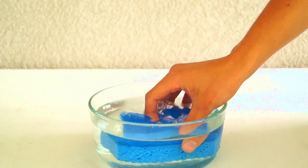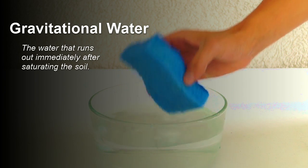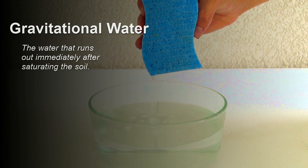After a watering period, soil is not able to retain all of the water. Due to gravity, this water will run out immediately after saturating the soil. This is known as gravitational water.